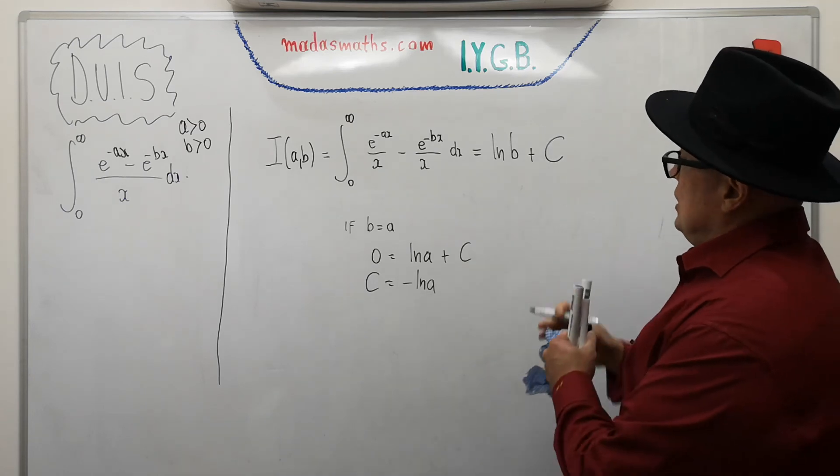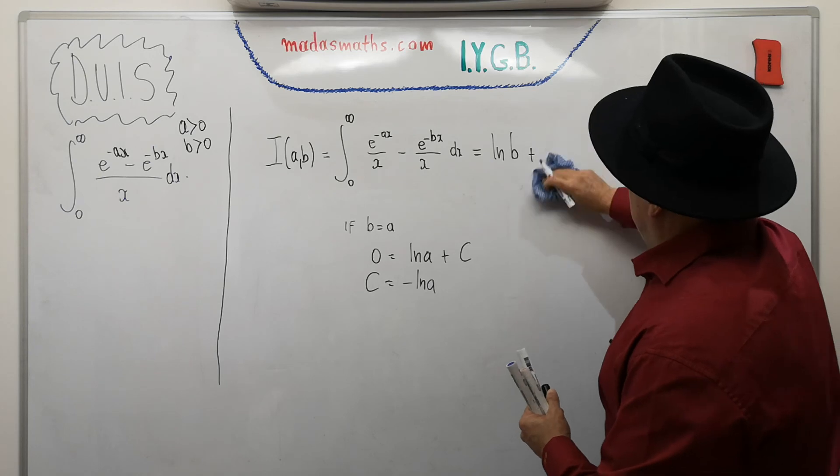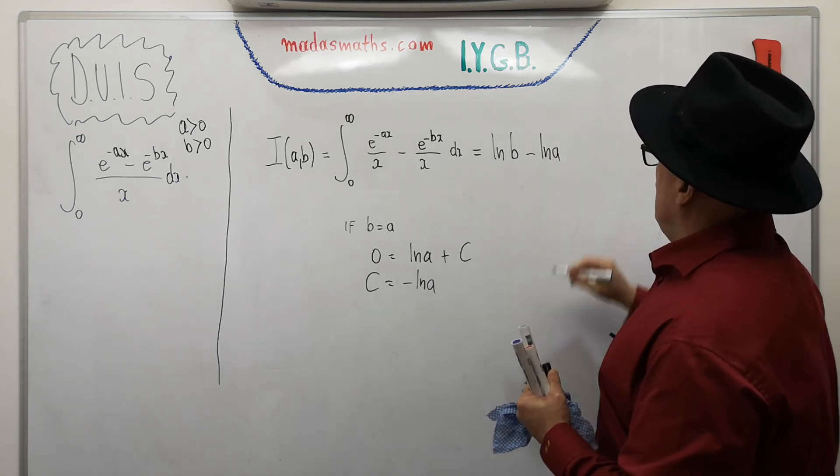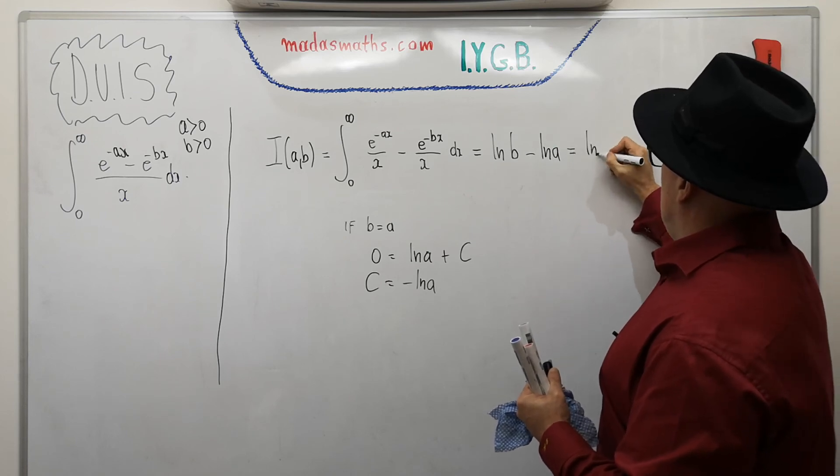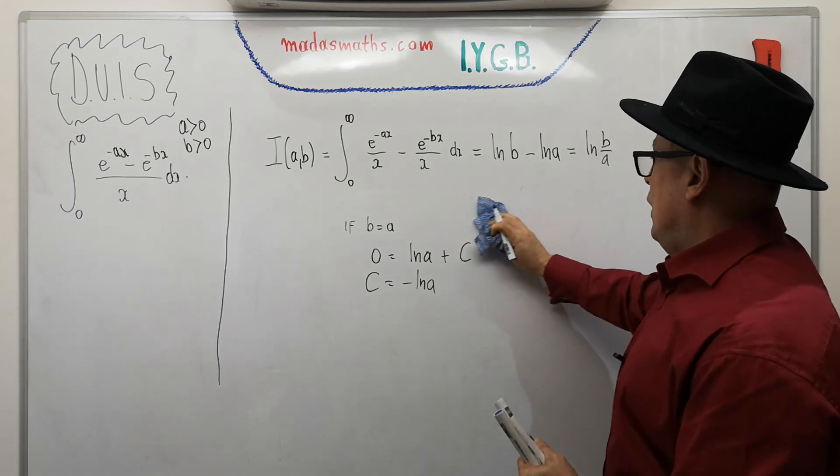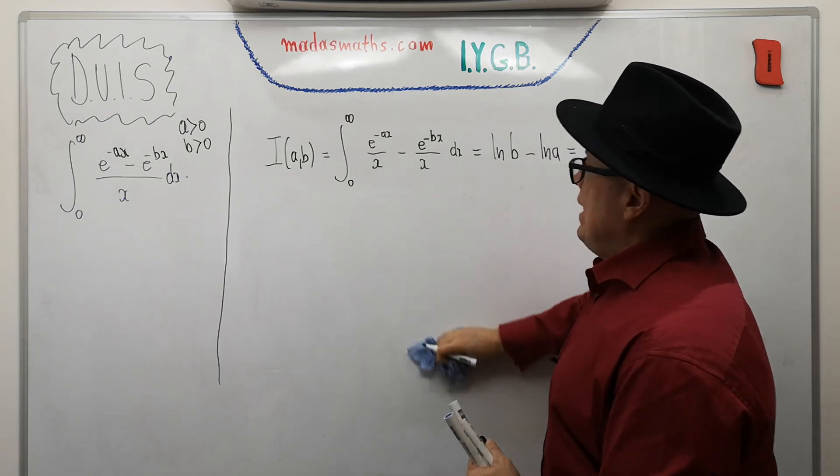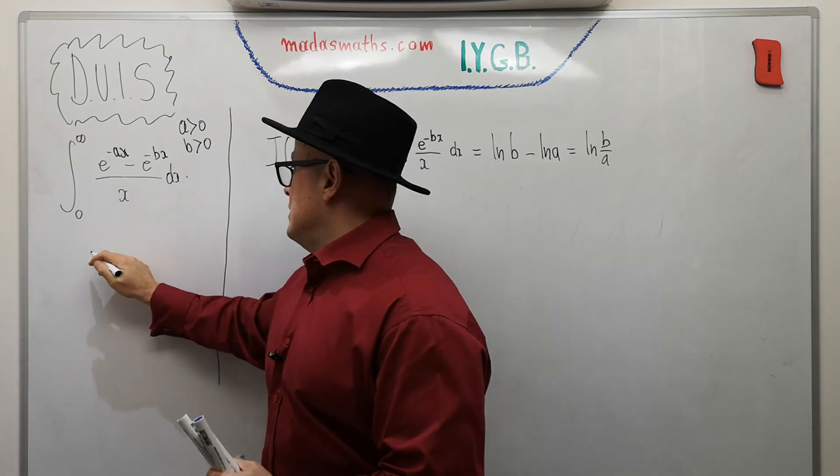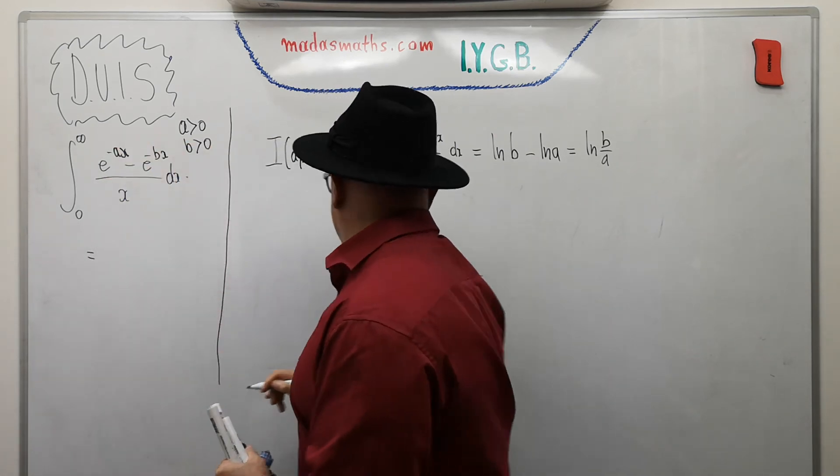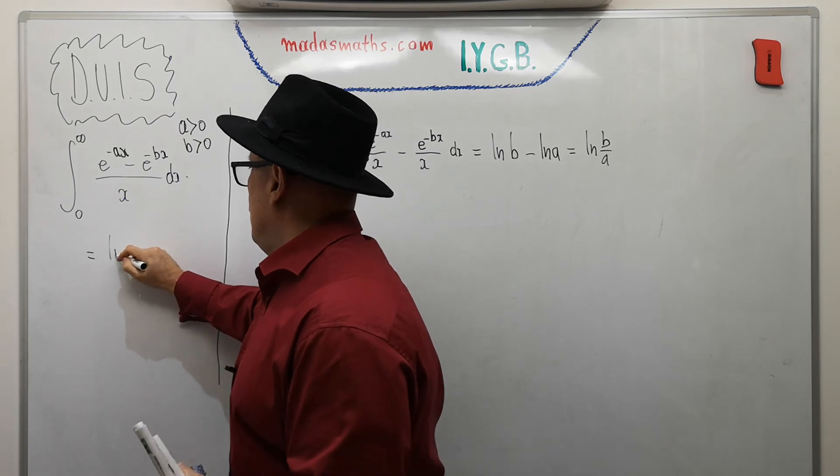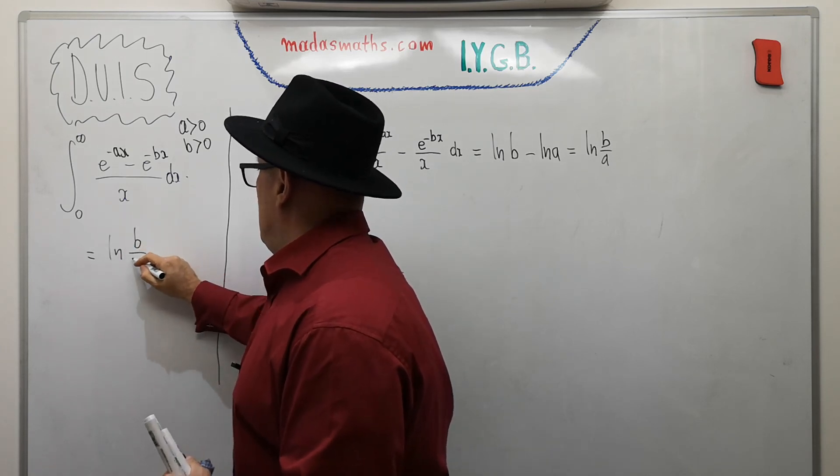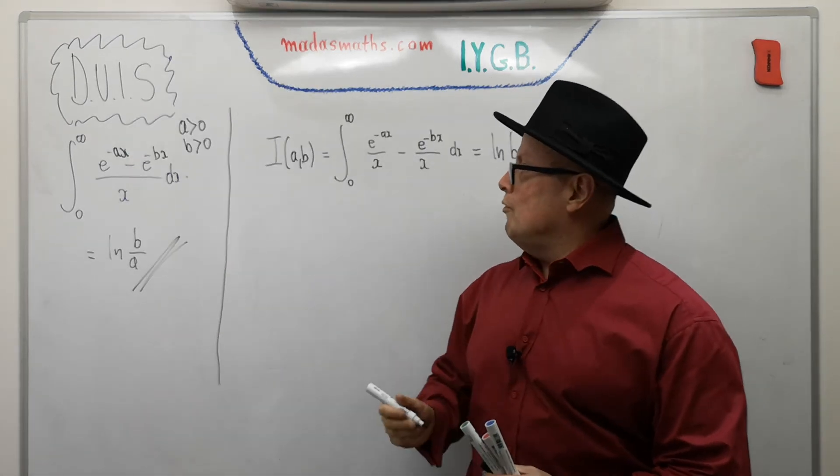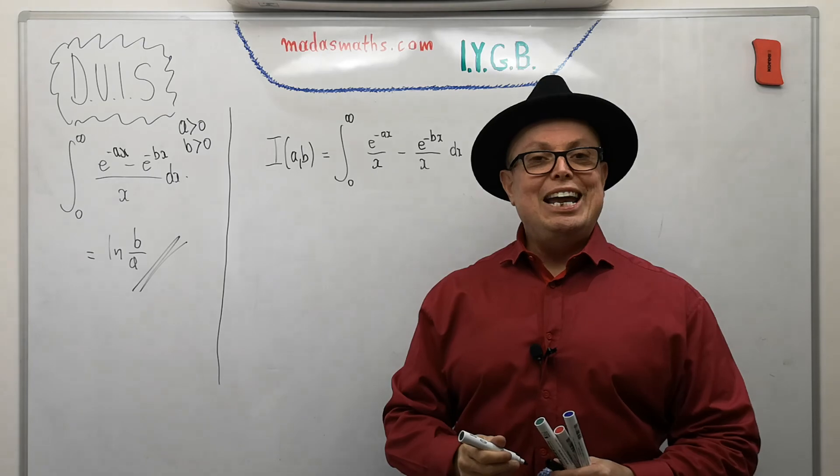I'm going to put it inside my answer here. So c is minus log a. And I can write this as log b over a in one line. Now I have a general formula for any numbers that a and b might be, so long as they're positive. So this particular integral reduces to the log of b over a. And this is the end of the lecture. This is the end of this particular question. And I'm definitely laughing now.